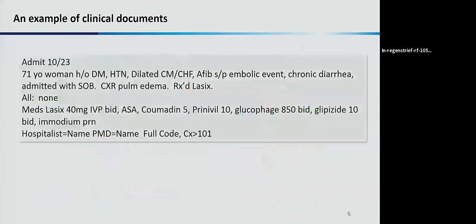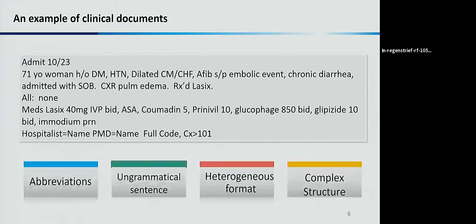Here's an example of clinical notes - a 70 year old woman with history of diabetes, hypertension. As you can see, the text is very different from English news articles. Full of abbreviations, ungrammatical sentences, heterogeneous format - sometimes a table, then a list of items, then free text. Sometimes very long sentences with complex structures. Regular NLP methods we develop for open domain, we want to leverage them, but sometimes we have to develop something new specific for this type of text.